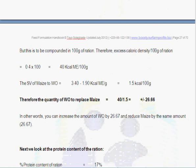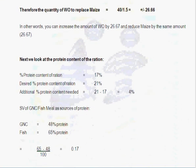In other words, you can either increase the amount of wheat offal by 26.6 percent and reduce maize, or you can increase the amount of wheat offal by 26.66 percent and take out the same amount of maize. That will correct this energy difference we're having and bring your ration's energy content down to the 2.26 we want.